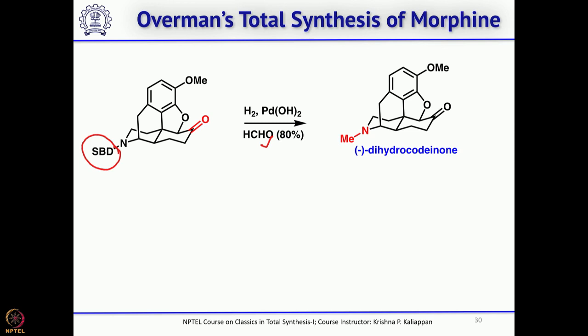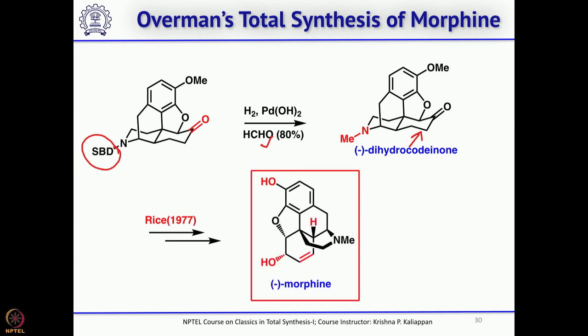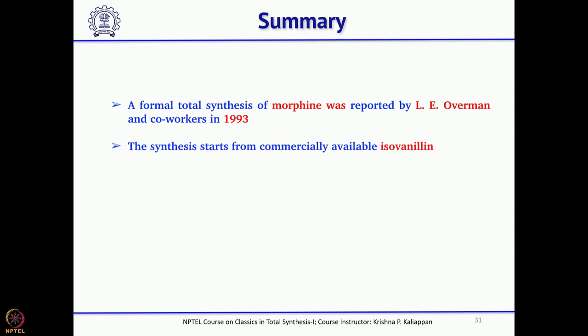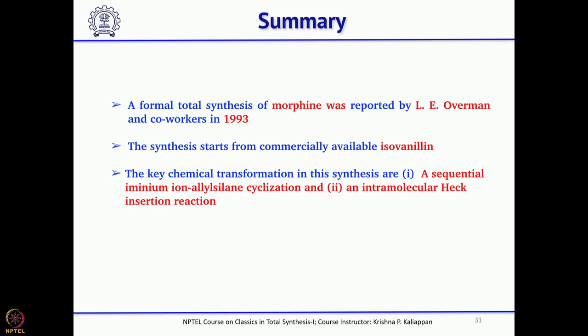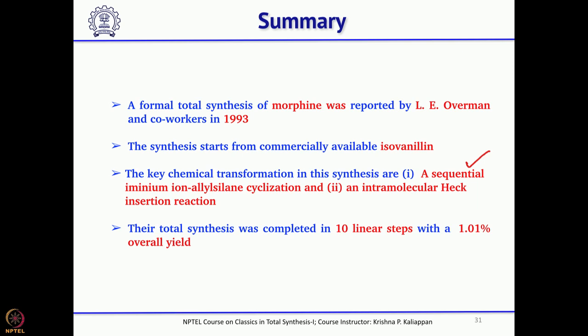Dihydrocodeinone required introduction of a double bond and reduction, which had already been reported, completing Overmann's formal synthesis of morphine. The intramolecular Heck reaction was the key step, starting from commercially available isovanillin. The second key step was sequential iminium ion/allylsilane cyclization. Overall, about 10 steps were taken with roughly 1% overall yield — low, but this represents a conceptually new synthetic route reported in 1993. We will continue discussing total synthesis of morphine by two more groups in the next lecture.